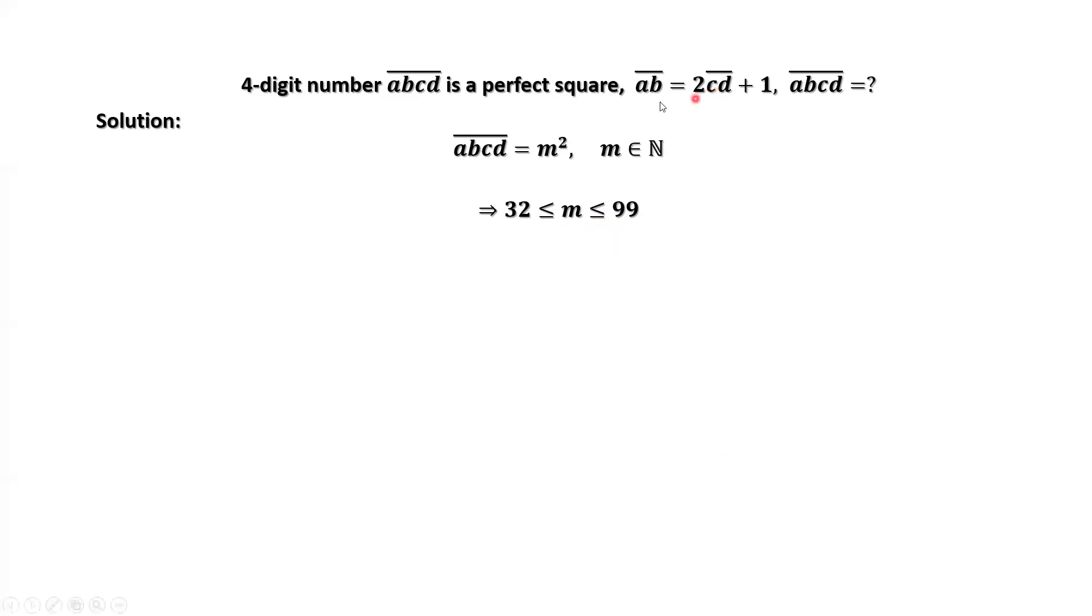AB can be rewritten as a function of CD. So here we can define CD as a new variable, X. AB equals 2 times CD plus 1. This implies AB equals 2X plus 1. We replace CD by X.